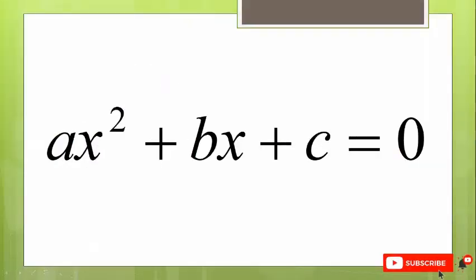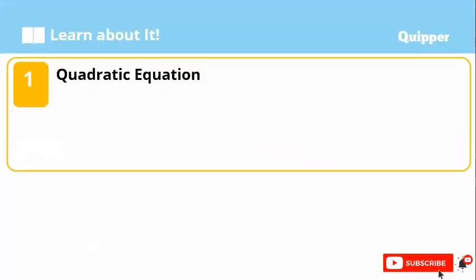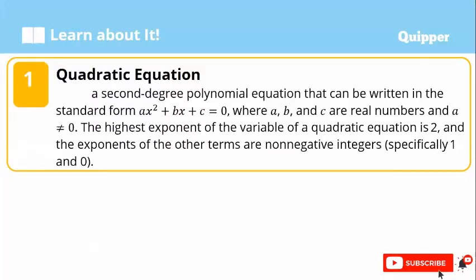Do you know this equation? Did you encounter this kind of equation in your previous years? This is a quadratic equation. A quadratic equation is a second-degree polynomial equation that can be written in the standard form ax² plus bx plus c equals 0, where a, b, c are real numbers and a is not equal to 0. The highest exponent of the variable is 2, and the exponents of the other terms are non-negative integers, specifically 1 and 0.